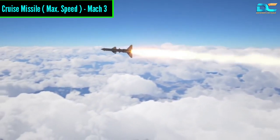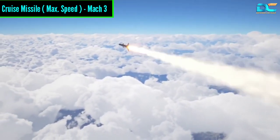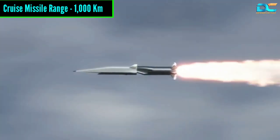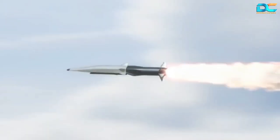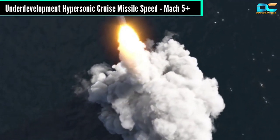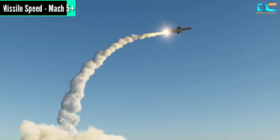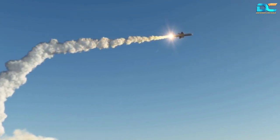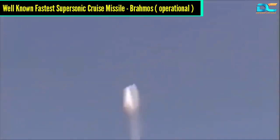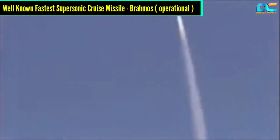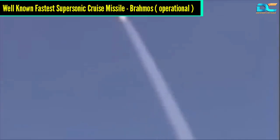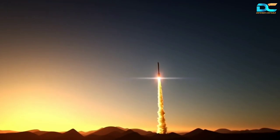On the other hand, cruise missiles can achieve a maximum speed of Mach 3, roughly around 3,700 kilometers per hour, and can go up to a maximum range of around 1,000 kilometers. A few countries are working on hypersonic cruise missiles that would travel at least five times the speed of sound, or Mach 5. The currently operational fastest cruise missiles are supersonic ones — the most well-known being the Indian BrahMos missile, capable of flying at a speed of 3,900 kilometers per hour.